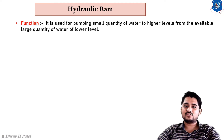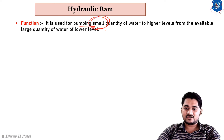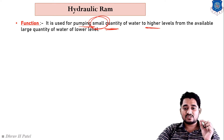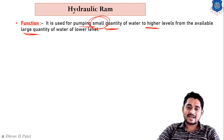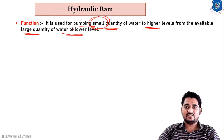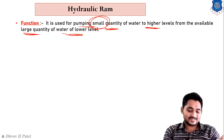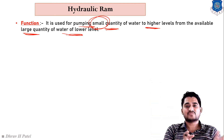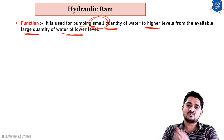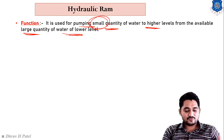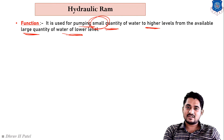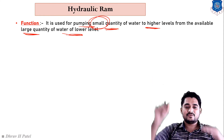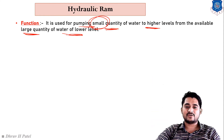Our next machine is the hydraulic ram. The basic function of the hydraulic ram is to pump a small quantity of water to a higher level using a large quantity of water available at a lower level. So if we have a large quantity of water at the lower level, we can supply some amount of it to a higher level using the hydraulic ram.